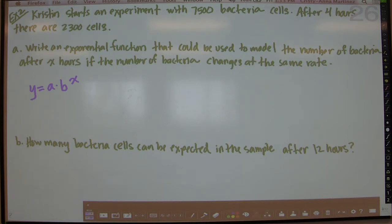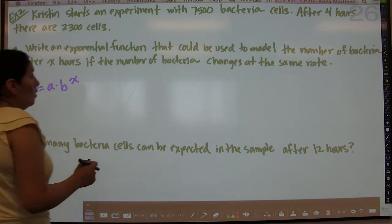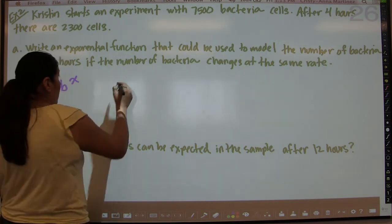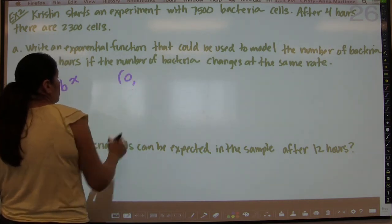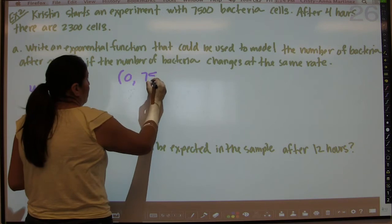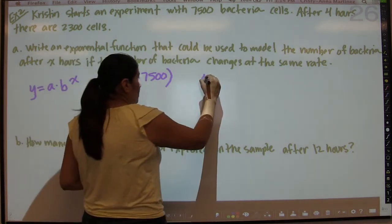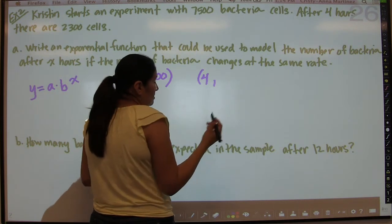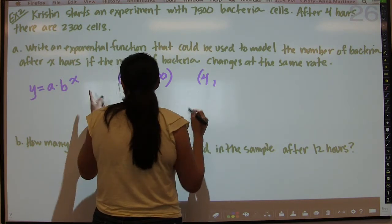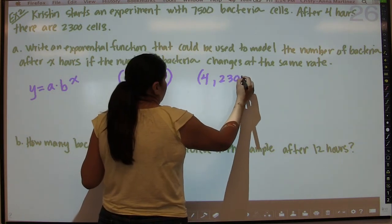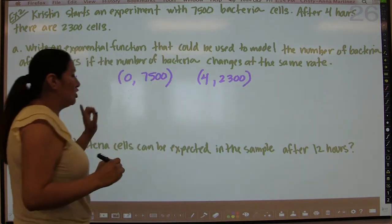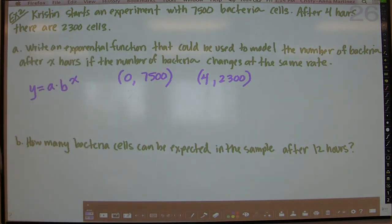It says Kristen starts an experiment with 7,500 bacteria cells. After 4 hours, there are 2,300 cells. So basically when she starts the experiment, we're going to call that t equal to 0 hours. So at the very start of the experiment, she has 7,500 cells. And then 4 hours later, when t is 4 or x is 4 in this case, then she has 2,300. So we have two ordered pairs that give us information.